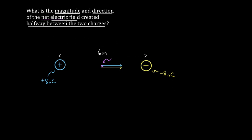So how do we find this net electric field? The net electric field just points in the x direction. It's going to equal the sum of the electric fields each charge creates there. For the blue charge, that's k times the blue charge divided by r squared. Then for the yellow charge, it's plus k times that charge divided by r squared.